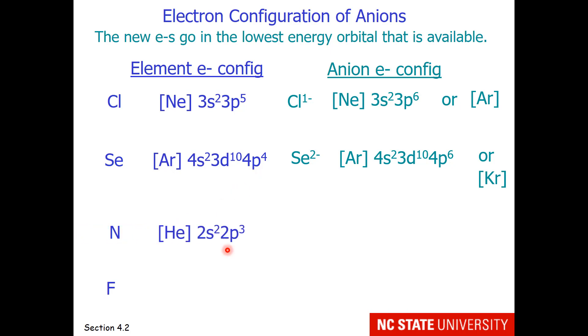For nitrogen, the last level is 2p3, so we have room for three more p electrons. So that is nitride with a 3- charge. And we could write it out the long way, but it is isoelectronic with neon.